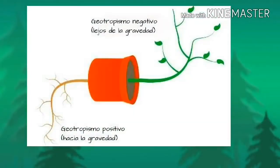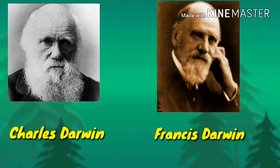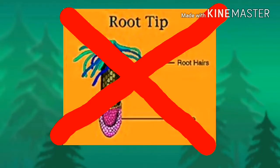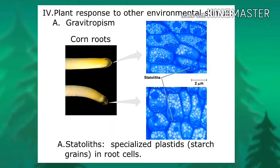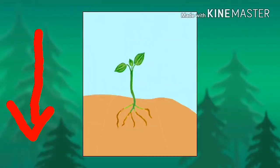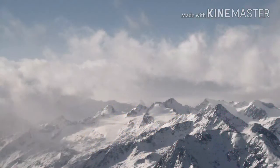Gravitropism is the effect of gravity on plant growth. Charles and Francis Darwin discovered that if the root caps are removed, roots no longer display responsiveness to gravity. Root caps contain specialized cells called statoliths, which are found within organelles called amyloplasts. They settle at the bottom of the cell and put pressure on the organelles, thus signaling the downward direction of the roots.